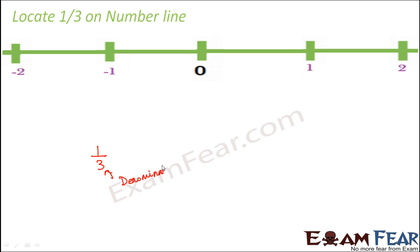So we are going to divide each block into 3 equal parts. Each block means each section — each part between two integers. Like 0 to 1 is one block, 1 to 2 is another block, 2 to 3 is another block, 0 to minus 1 is one block, minus 1 to minus 2 is another block. So we divide this block into 3 equal parts because 3 is the denominator. So we divide it into 1, 2 and 3 — three equal parts. Once divided, this first portion is 1 part out of 3 equal parts, so this point is 1 by 3.